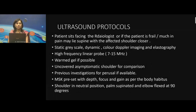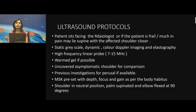The patient faces the radiologist, and if the patient is frail or in much pain, they may lie supine with the affected shoulder closer to the operator. We combine static grayscale imaging, dynamic scan, color Doppler imaging, and elastography where needed. High-frequency linear probes from 5 to 12 or 7 to 15 MHz are used, as attached to the ultrasound units available. Warm gel is recommended, and the asymptomatic shoulder should always be uncovered for comparative analysis.